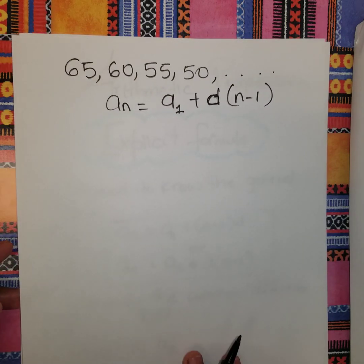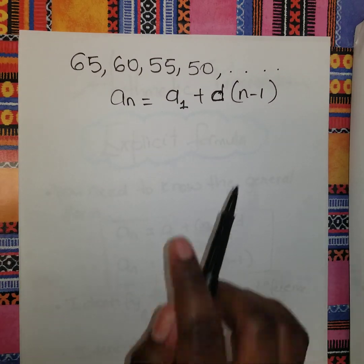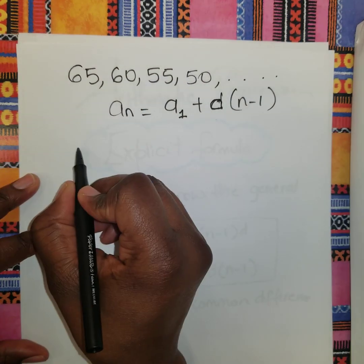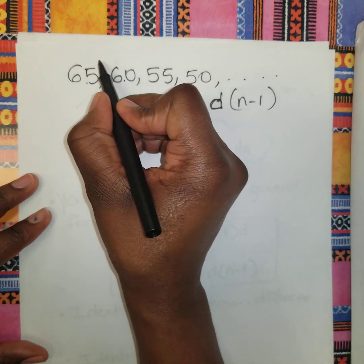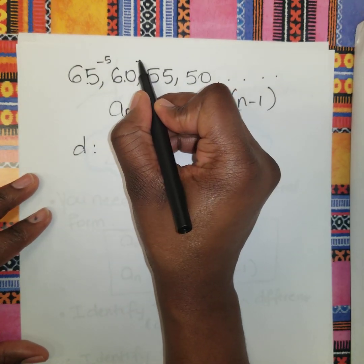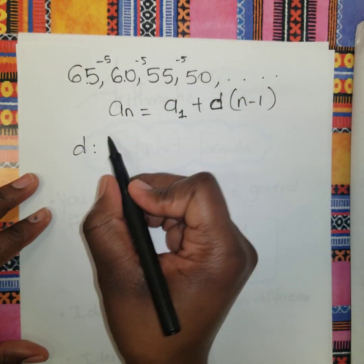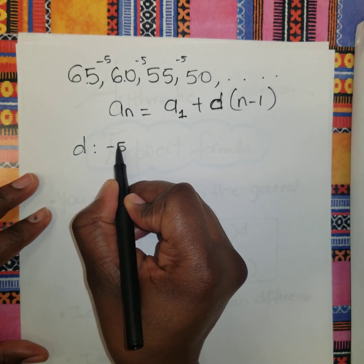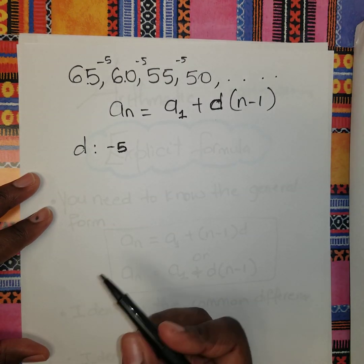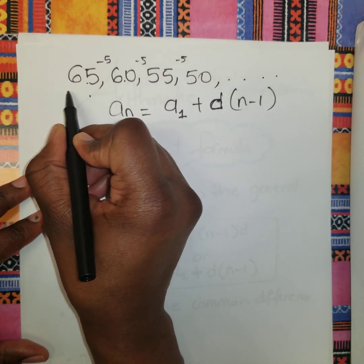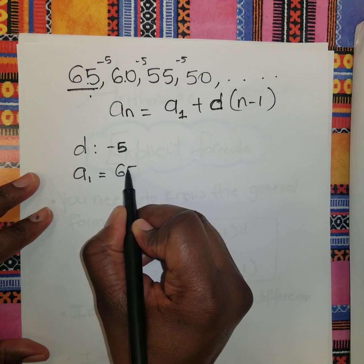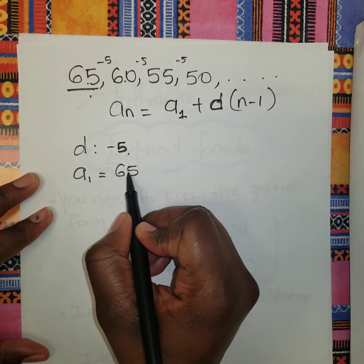We need to find d, the common difference. Between 65 and 60, we're subtracting 5 continuously, so d = -5. Your first term, a_1, is 65 because that's the first term given. Knowing these two things, we can substitute into the general form.